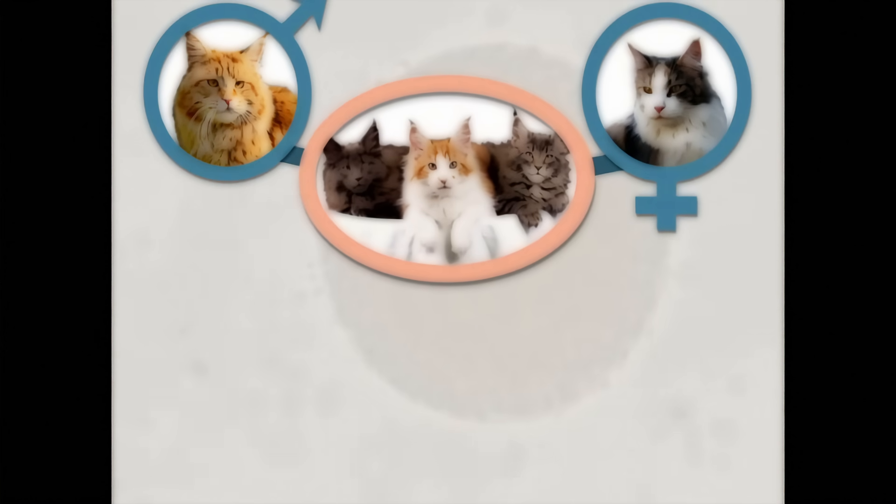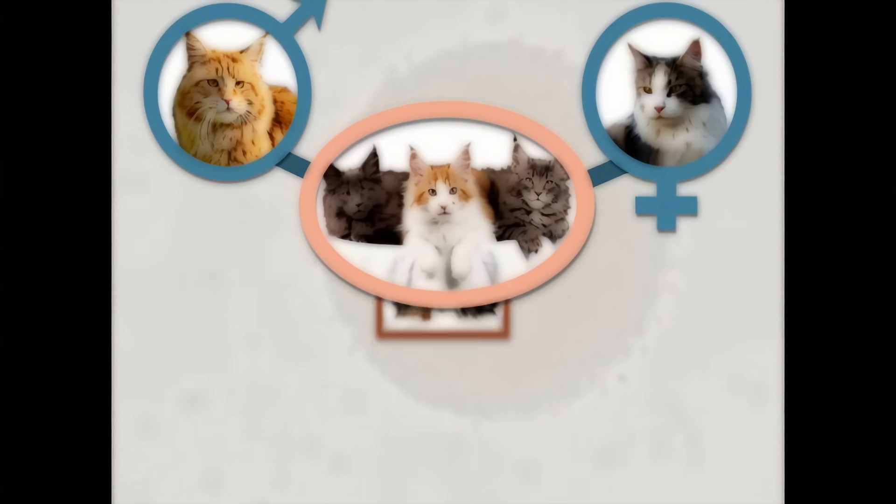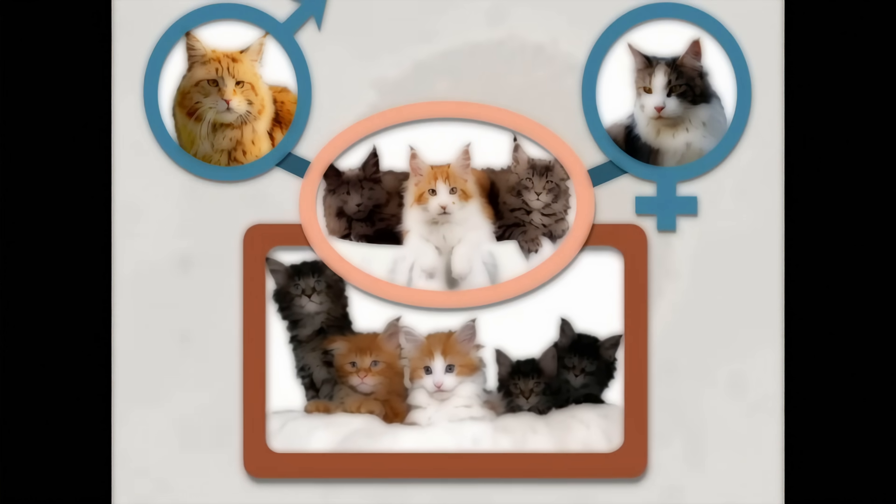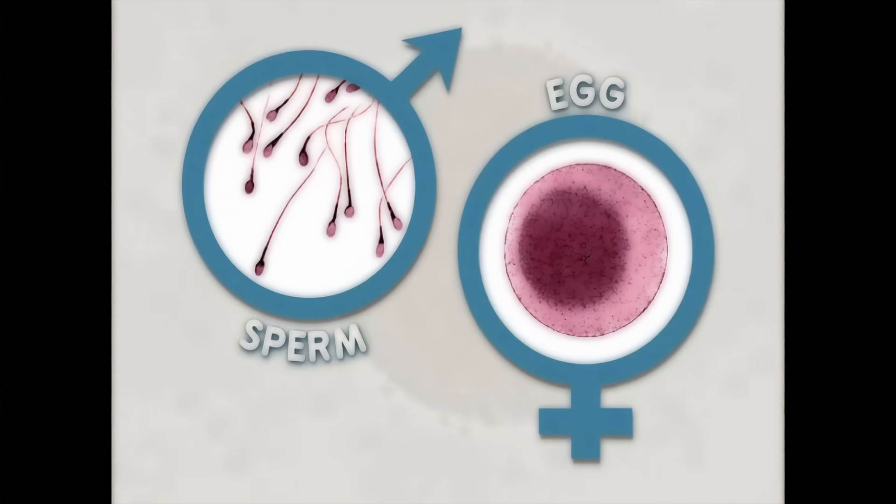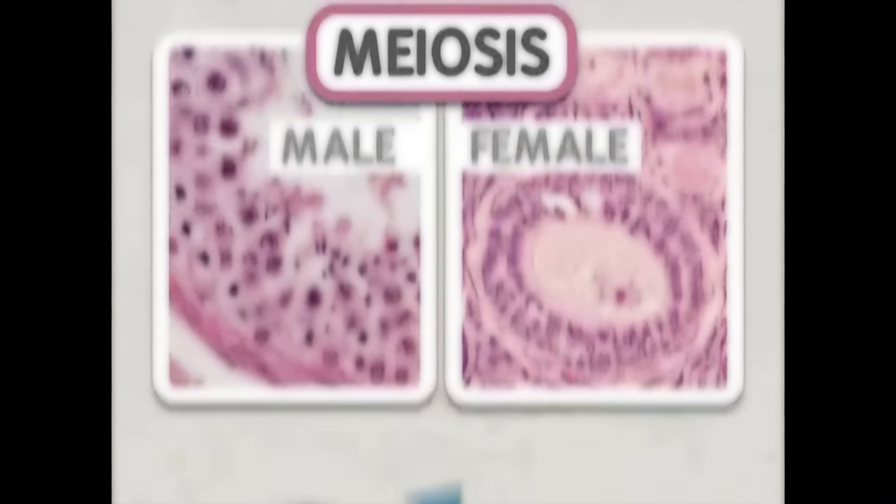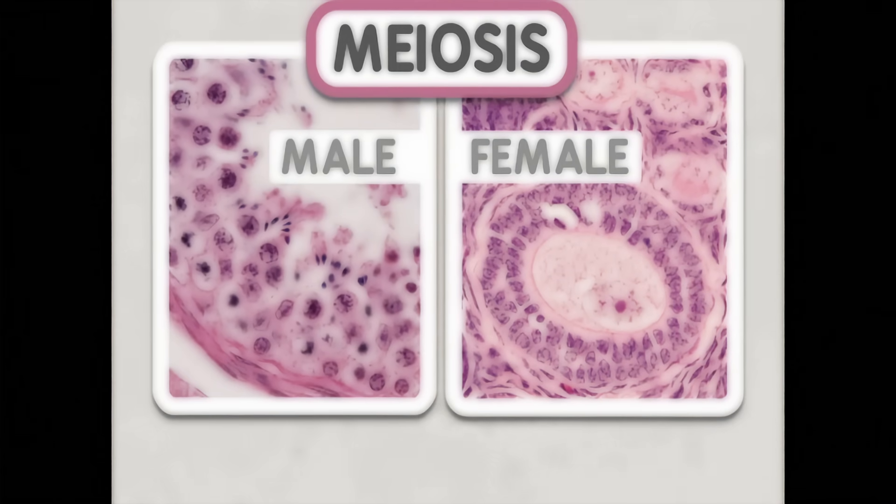The embryo then grows into an adult who in turn passes their genetic information on to their own offspring. Gametes are formed through a process called meiosis.